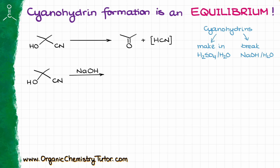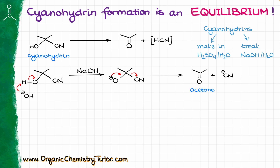If I were to take a cyanohydrin and treat it with sodium hydroxide, I would get the original carbonyl — acetone in this case — and the cyanide anion. Here on the screen I have a mechanism where cyanide is a leaving group. While it is not the most common leaving group, it can serve as one relatively easily in basic conditions. There are quite a few interesting reactions that use cyanide as a nucleophile that temporarily turns into a leaving group and then disappears when it is no longer needed.